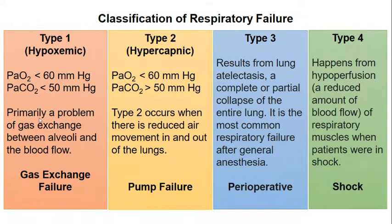Type 1 is primarily a problem of gas exchange between the alveoli and the blood flow in the lungs. The problem has a much greater impact on oxygen than carbon dioxide, because of the lower blood solubility of oxygen compared to carbon dioxide.